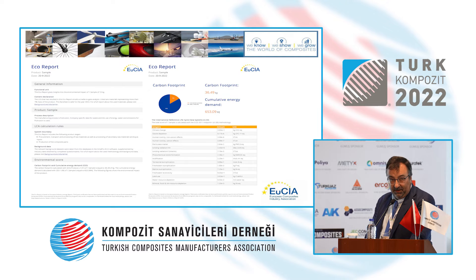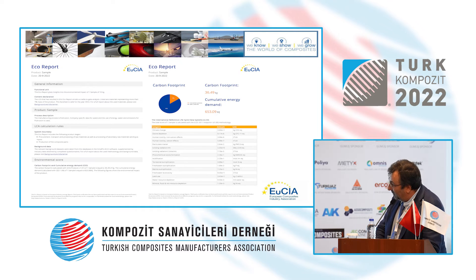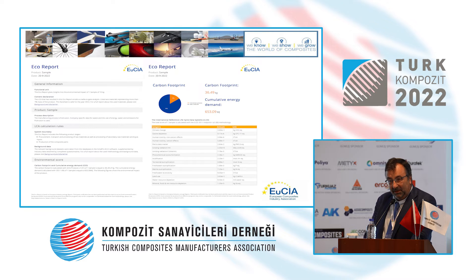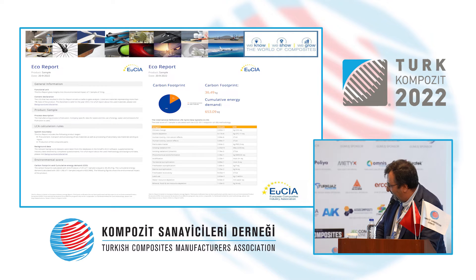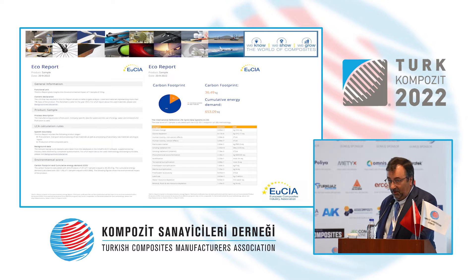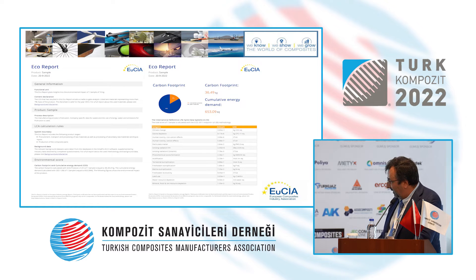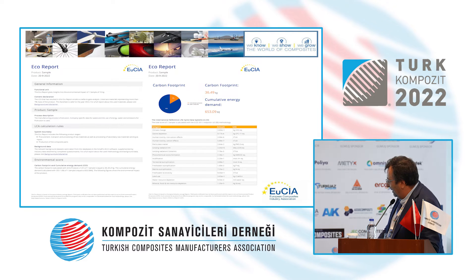The eco-report is a two-page document showing the carbon footprint and cumulative energy demand split between raw materials in blue and the production process. For glass fiber applications, most of the environmental footprint comes from the raw materials, which is true in general because the impact of conversion processes for composites is very low. The report also includes a full list of other LCA indicators such as ozone creation, climate change, water consumption, and more.